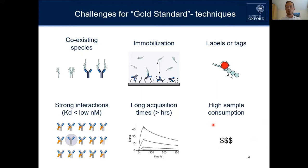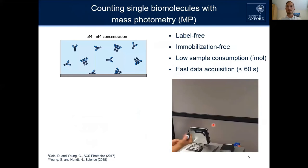Mass photometry helps by offering a label-free and immobilization-free approach. Our experiments generally consume very low amounts of sample, and data acquisition is relatively fast — a typical experiment takes about 60 seconds.